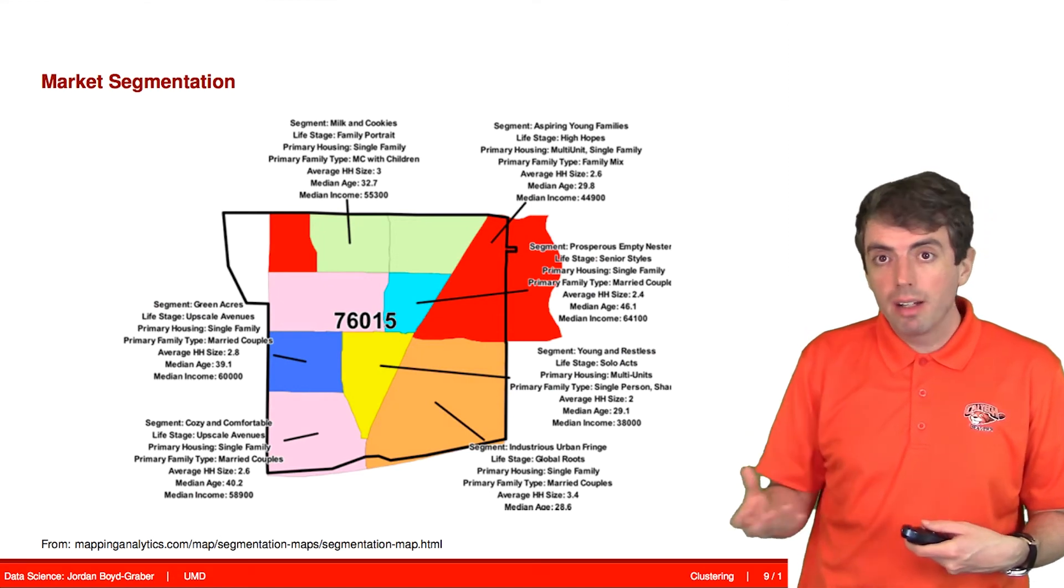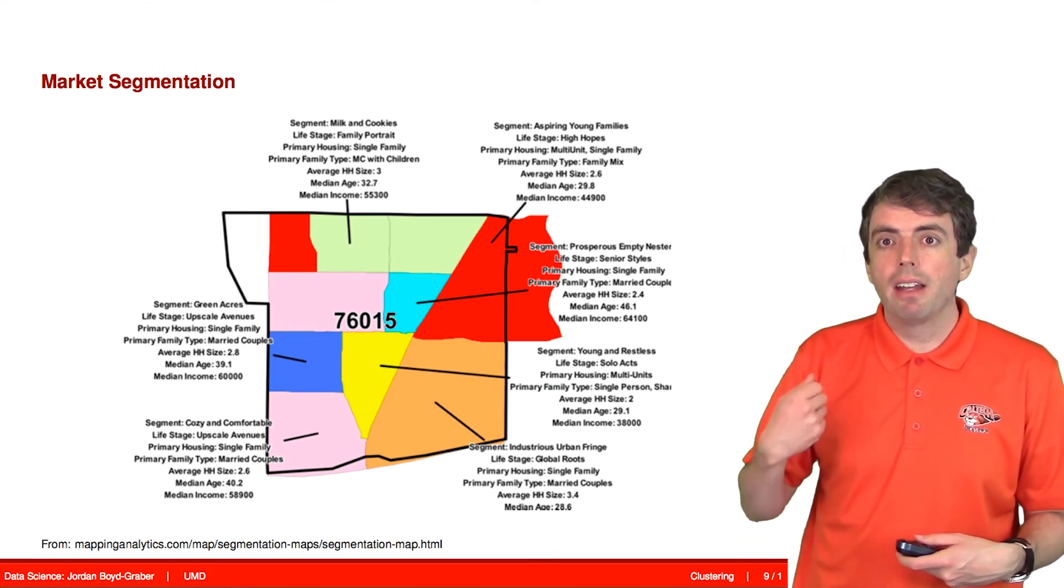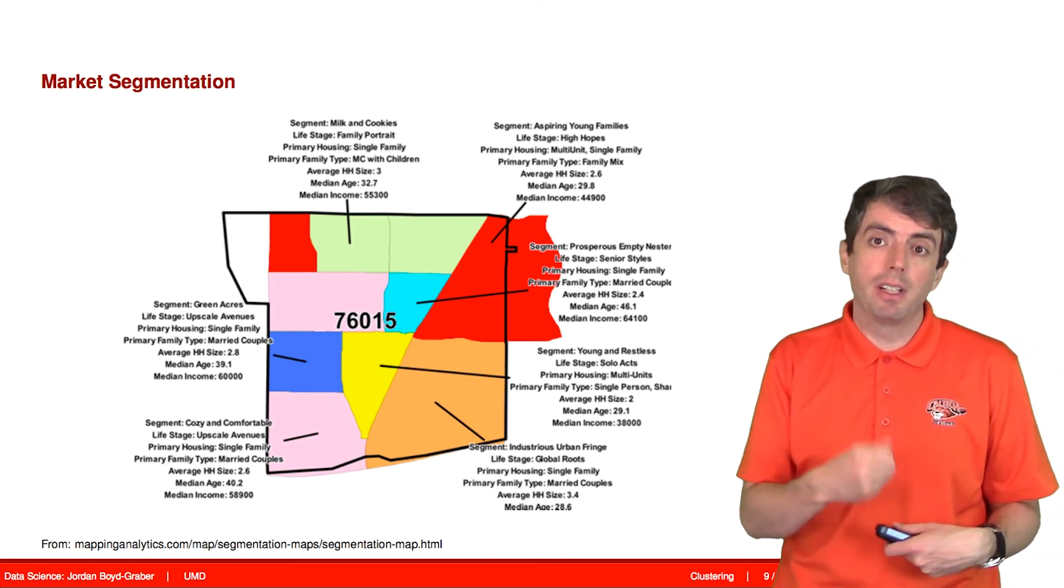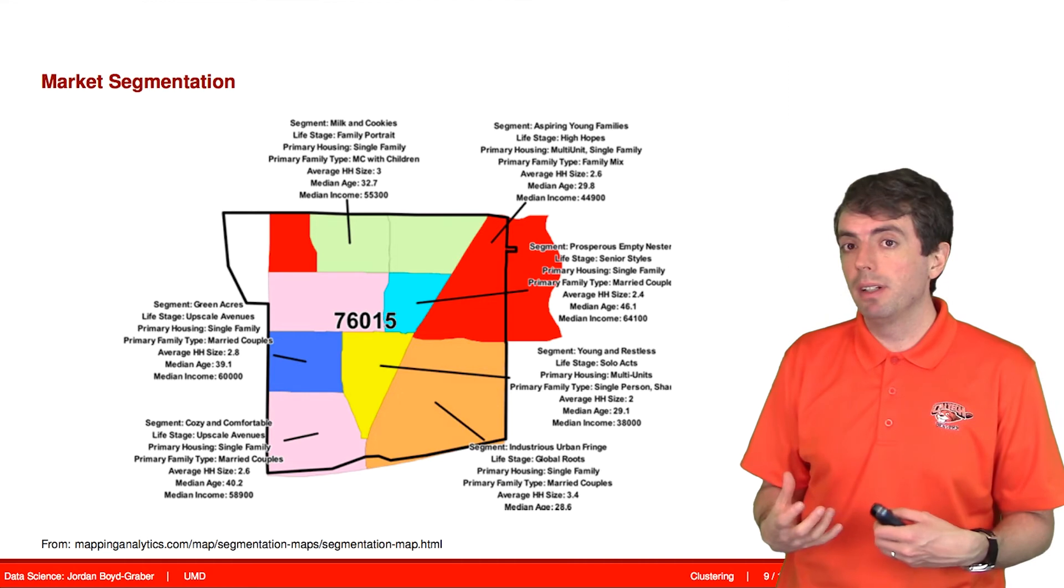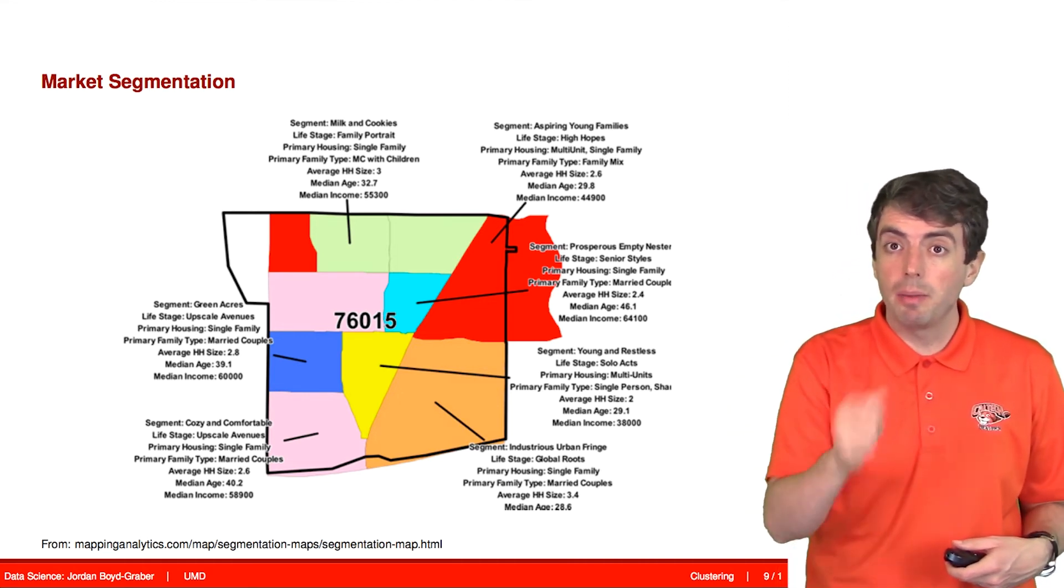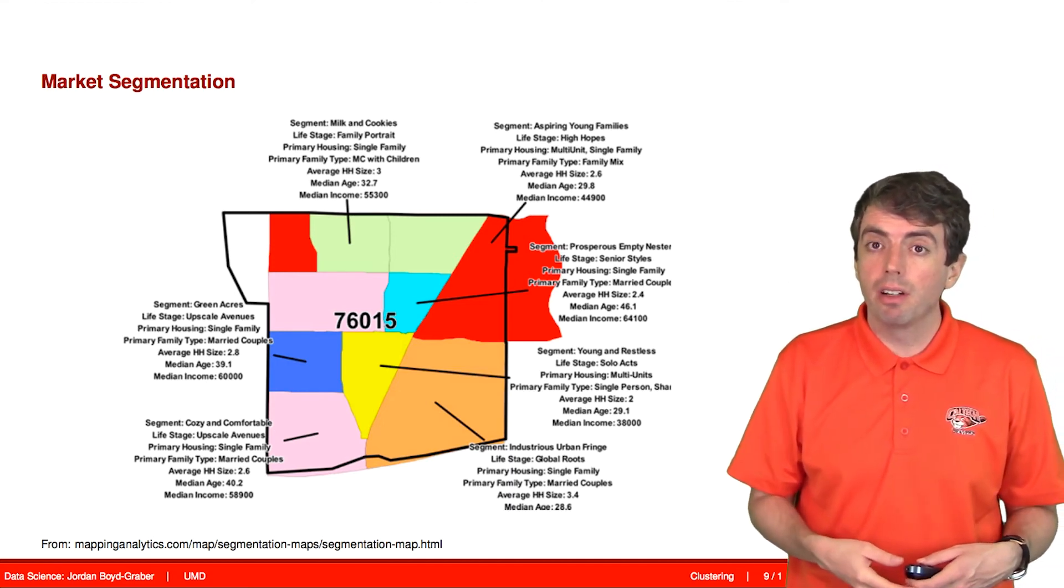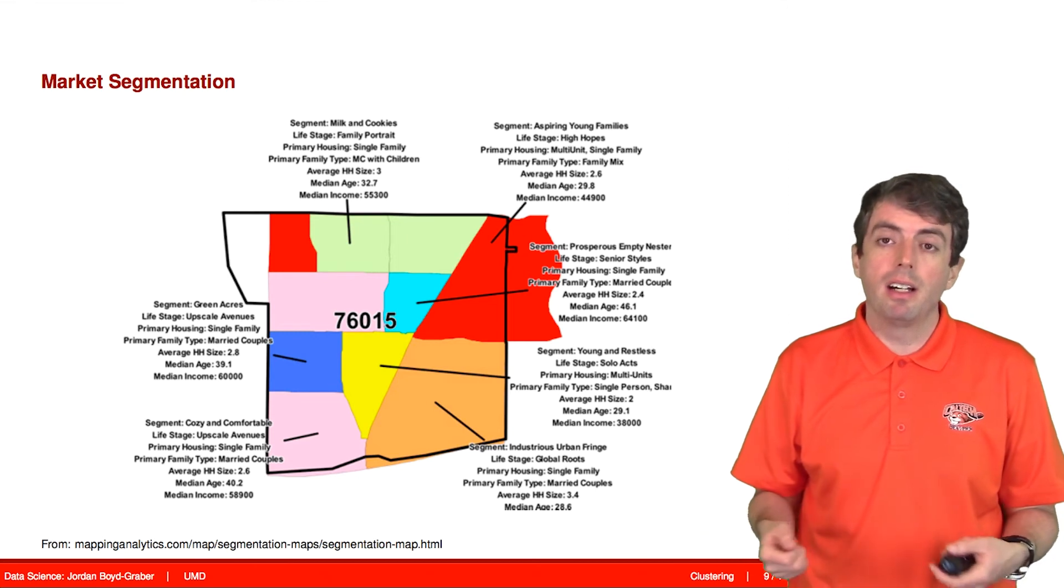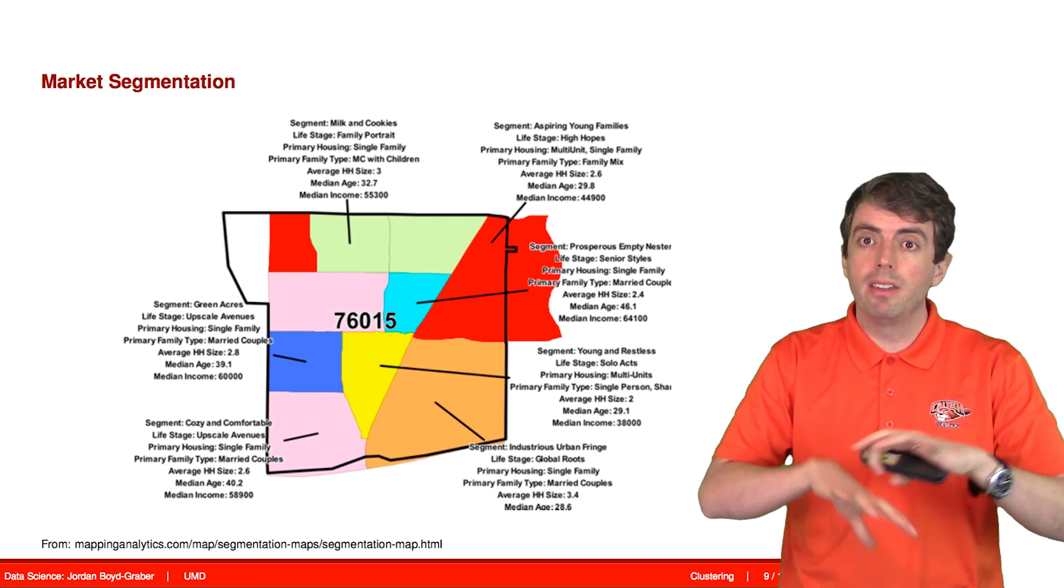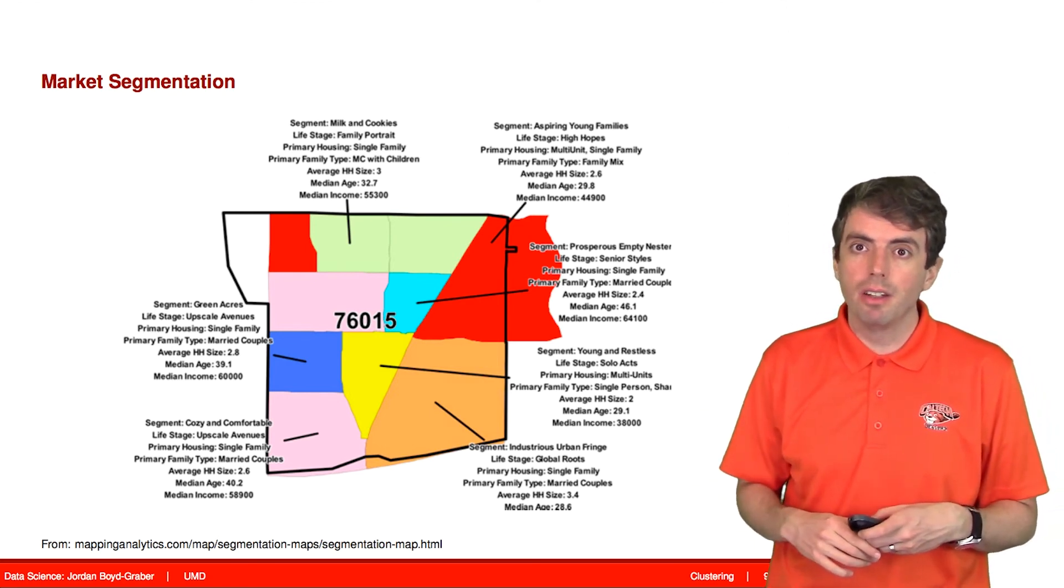Also in a business setting, market segmentation is a very common use of clustering. Often when you are a company, you want to send out tailored advertisements to specific people. You want to send one kind of advertisement to a first-time customer, another advertisement to a customer who's been with the company a long time. Perhaps you want to segment on the kind of household, whether they have kids or not. You can use clustering to find those different segments and then send out specific advertising to those groups.